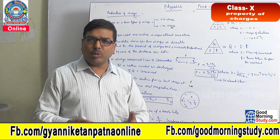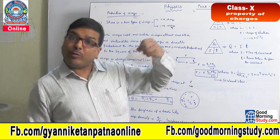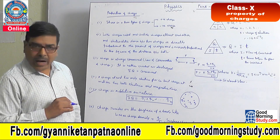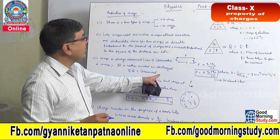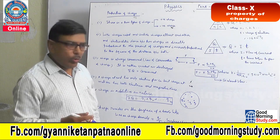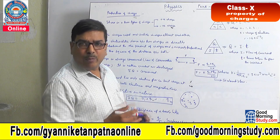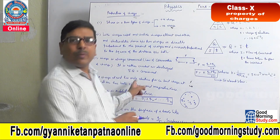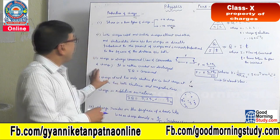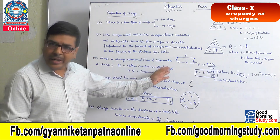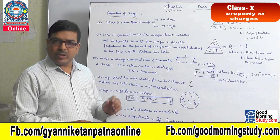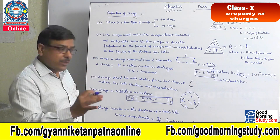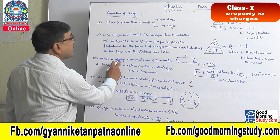Since we can sum all charges, we can find the total charge of a given body — charge is additive in nature. The total charge equals the sum of gain of charge plus the sum of loss of charge, but the total always remains the same. Charge is neither created nor destroyed; charge is only transferred. This demonstrates the law of conservation of charge.